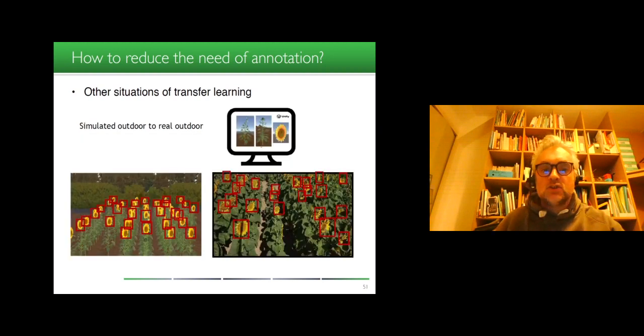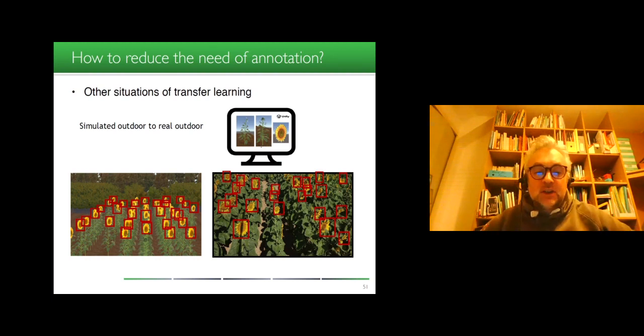Another situation of transfer learning is transfer from simulated outdoor to real outdoor, which is now easily accessible thanks to a video gaming environment such as Unity, where it's now possible kind of easily to have automatically annotated a large amount of virtual plants, digital twins, as we say, and then to train the model on these virtual plants and then transfer the model to the real plants, as we have done here for sunflower, flowering time in this example.